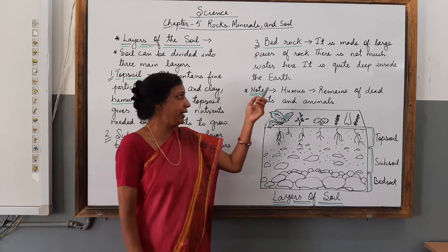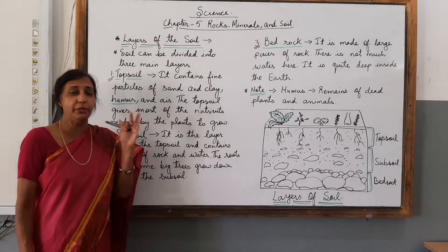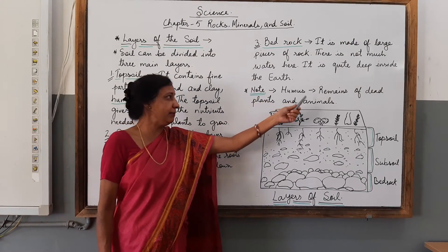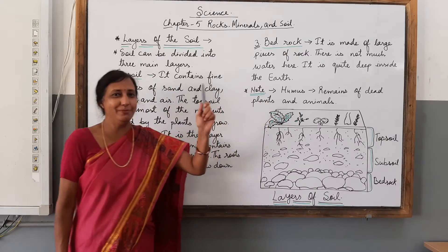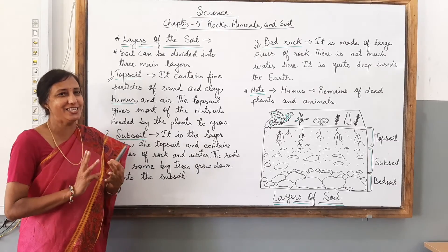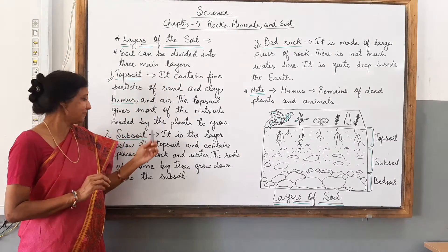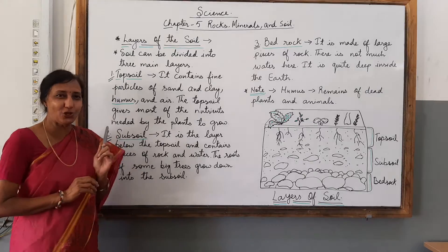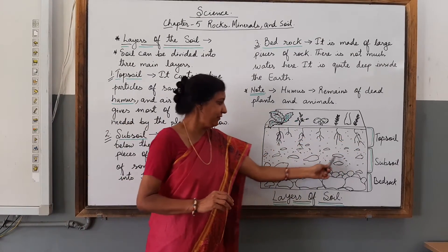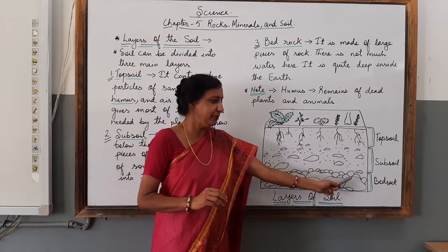The bedrock is quite deep inside the earth. Do not forget the meaning of humus - it means remains of dead plants and animals. I hope you now know about all three layers of the soil: the topsoil, subsoil and the bedrock, and what things are present in each layer.